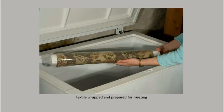Objects that show damage consistent with moths or beetles should undergo remediation. This is usually completed by freezing to kill all three life stages of insects: egg, larva, and adult. An infested piece will require isolation and a period of at least two weeks in a freezer that can reach below negative four degrees Fahrenheit. Your typical freezer will not reach this temperature, so contacting a conservation professional is recommended.